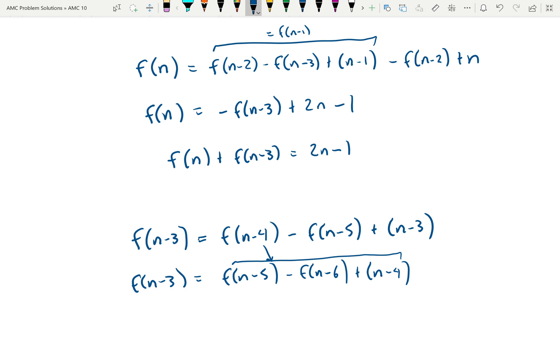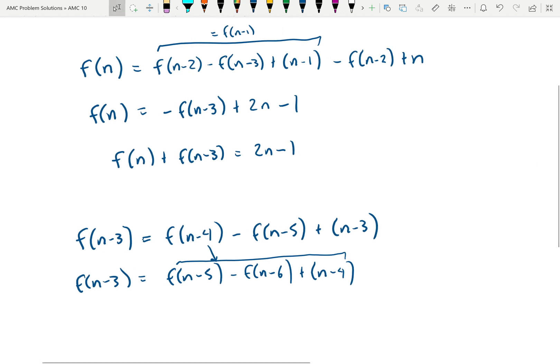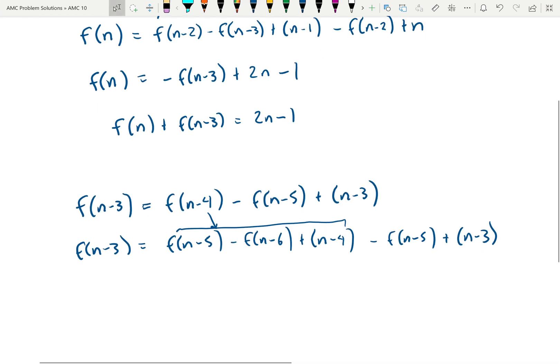And then continuing on with the -f(n-5) + (n-3). So combine everything there and we get that f(n-3) is equal to -f(n-6) + 2n - 7.